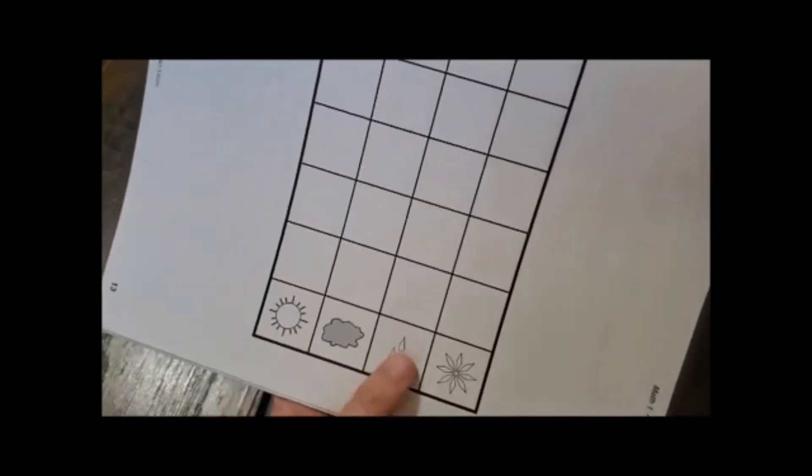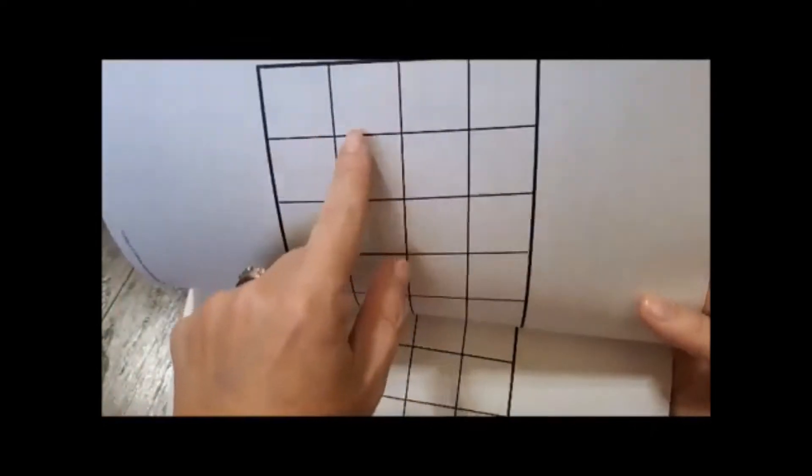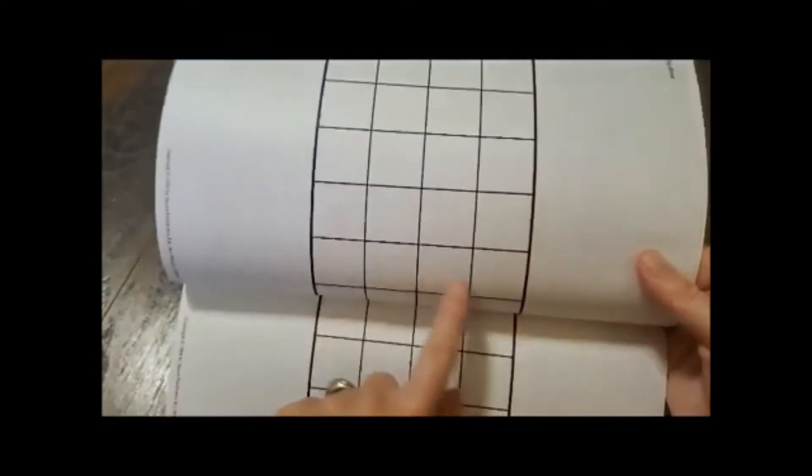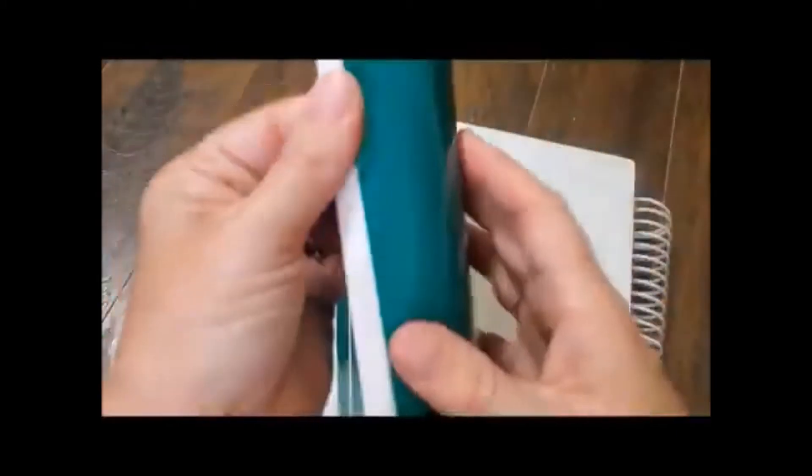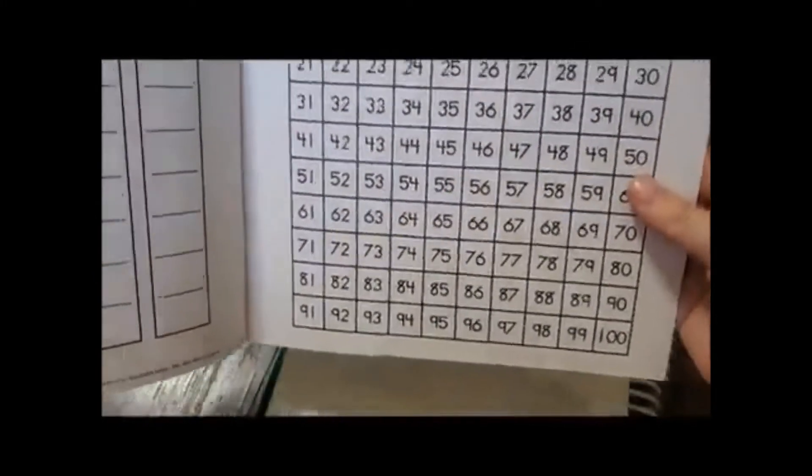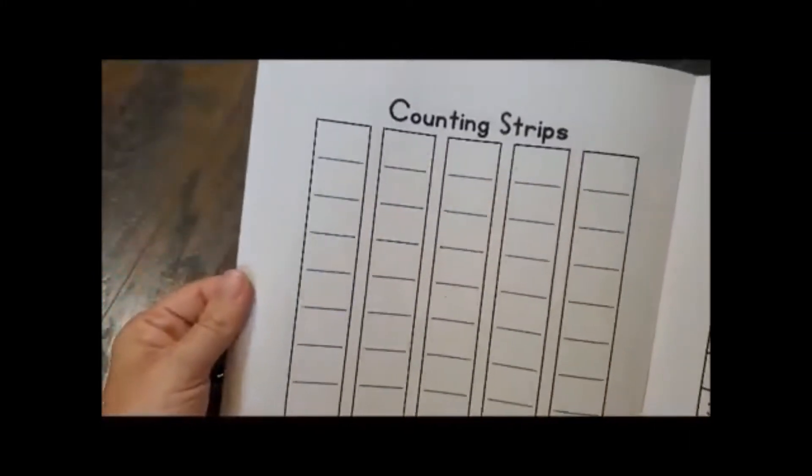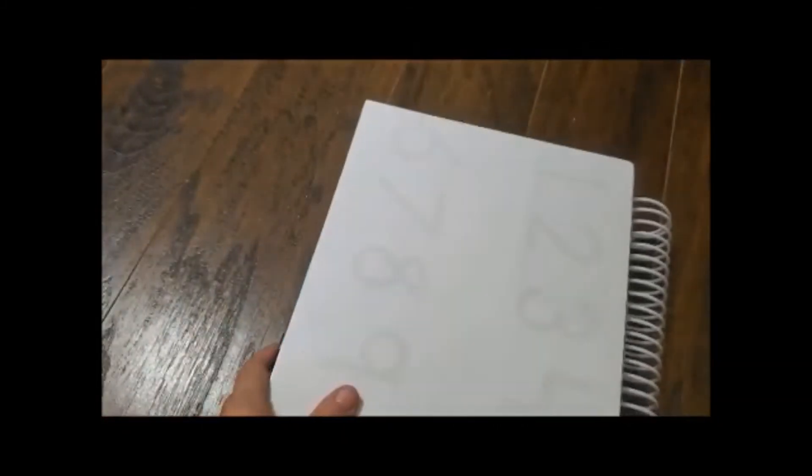And then here is a chart they are going to keep up with. If it is sunny, raining, snowy, or cloudy. That is cloudy. Sunny, cloudy, raining, snowy. And so they just go through each day and color in whichever one the weather is doing that day.